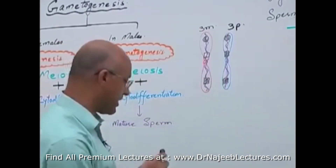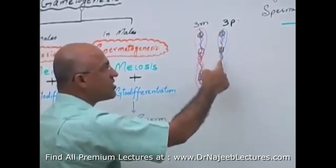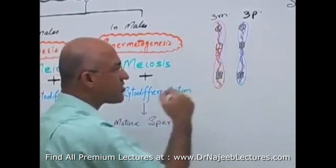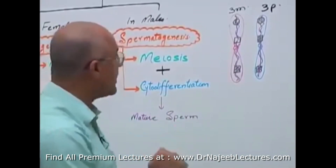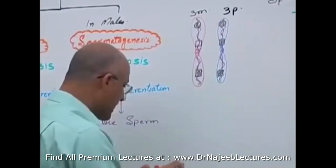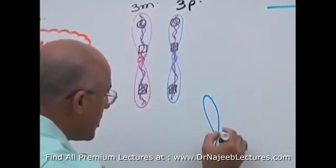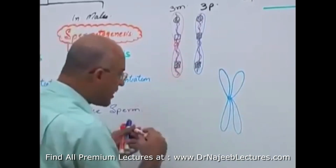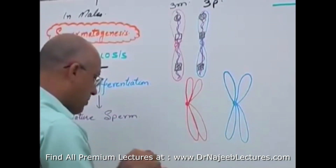Remember, these are chromosomes. Chromosome 3 paternal — this is called a single structured chromosome. This is also a maternal chromosome, but it is also single structured. When chromosomes replicate their DNA, chromosomes become duplicated. When DNA replication occurs, this chromosome will become duplicated. In the same way, if DNA has been replicated in this maternal chromosome, it will also become duplicated.